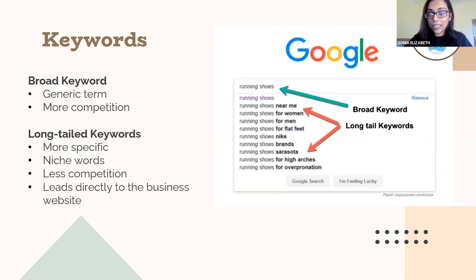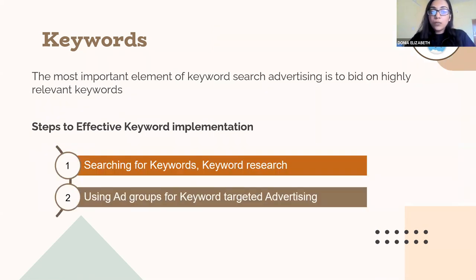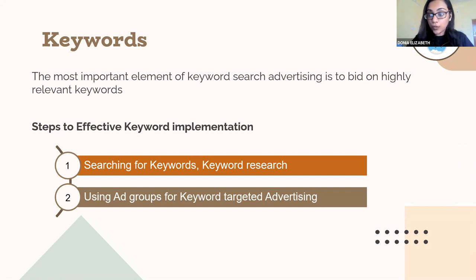For example, if you say 'running shoes Nike,' then only Nike brands or products will show up in your results page. When you map long tail keywords, the competition is less and it leads directly to the business website. The most important part of using keywords is to bid on highly relevant keywords with respect to your website. To do this effectively, you need to analyze what you're offering your customers, who your target customers are, and what the most prospective keywords they would type in are — ones which are unique and can be mapped against your website.